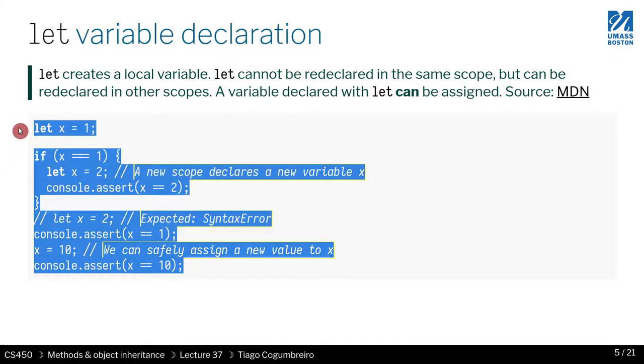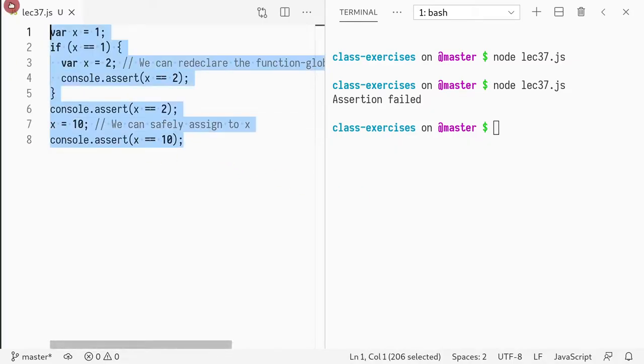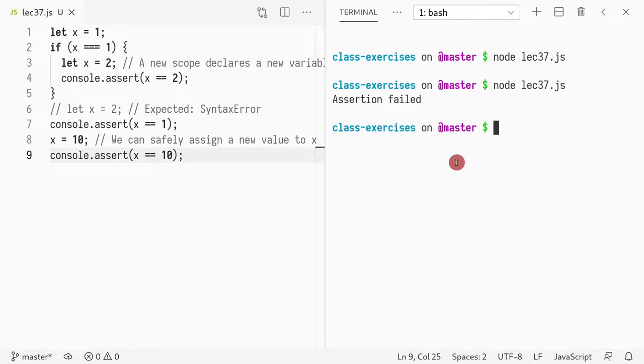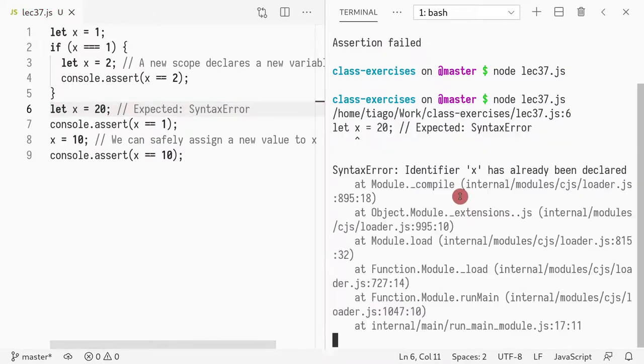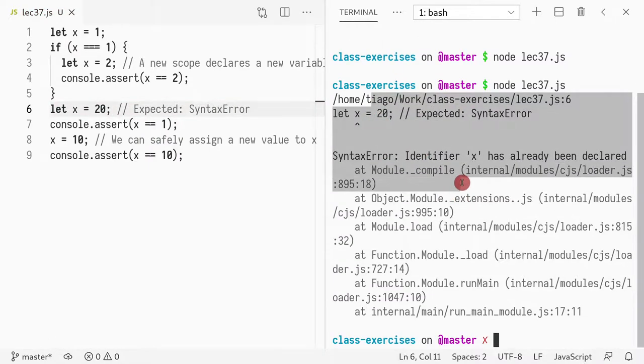Let me copy paste this code right here. But this is a variable that can only be declared once. So if I uncomment this, where I'm redefining x to be 2 or x to be 20, now I will get an error. See, I get a syntax error saying that x has already been declared.